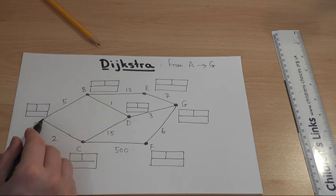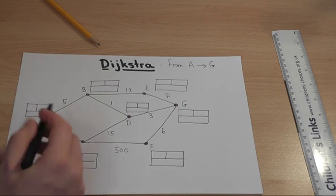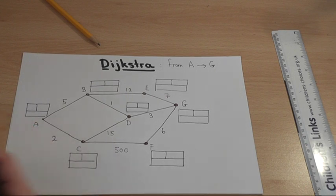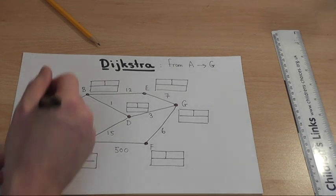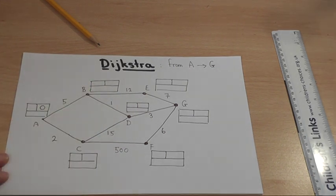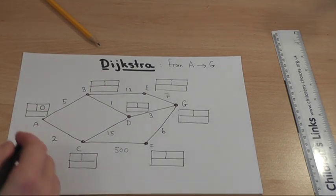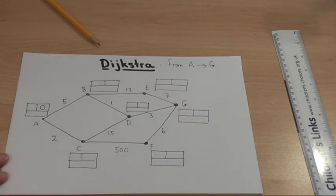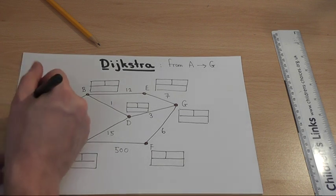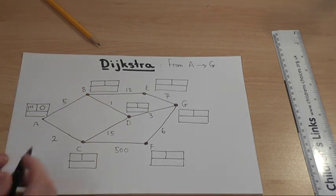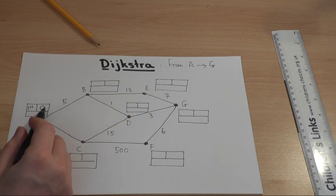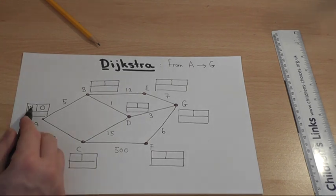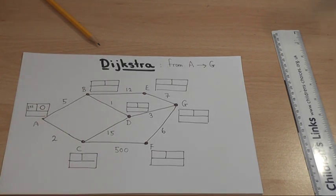We start at A. We've travelled no distance. And of course, we know the quickest way to get from A to A must be zero. So we can say for definite that zero is the quickest way to get to A from A. You wouldn't do a big route around and come back again. No, zero is the best way. And this is our first node that we have put a permanent label in. Temporary, permanent. And every Dijkstra starts with a one and a zero to get established.